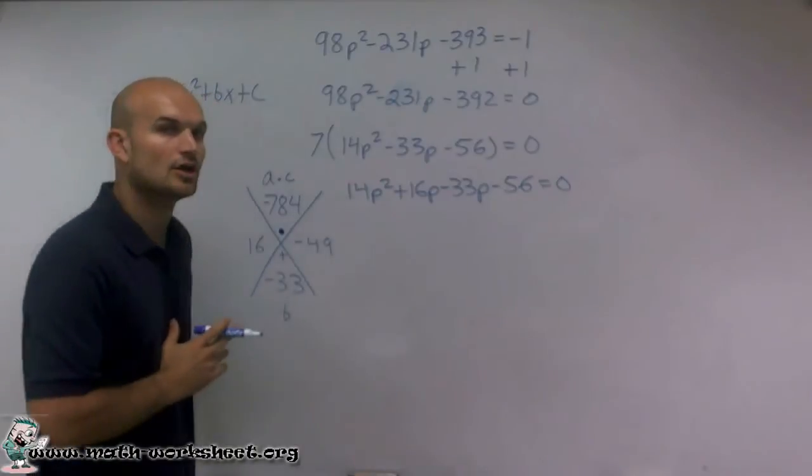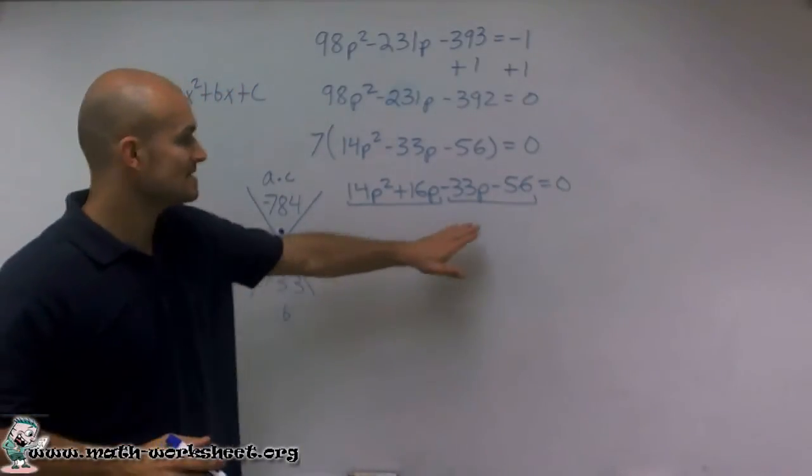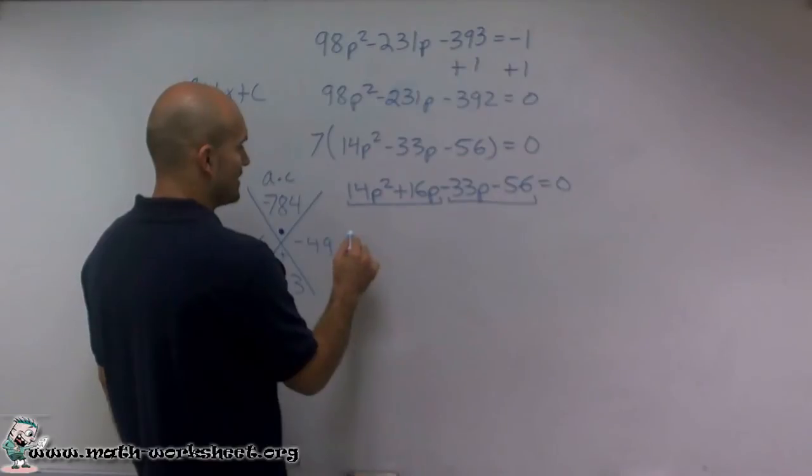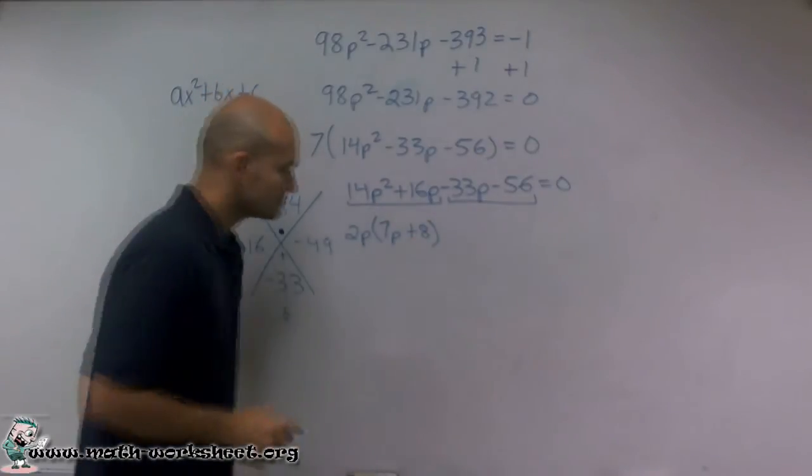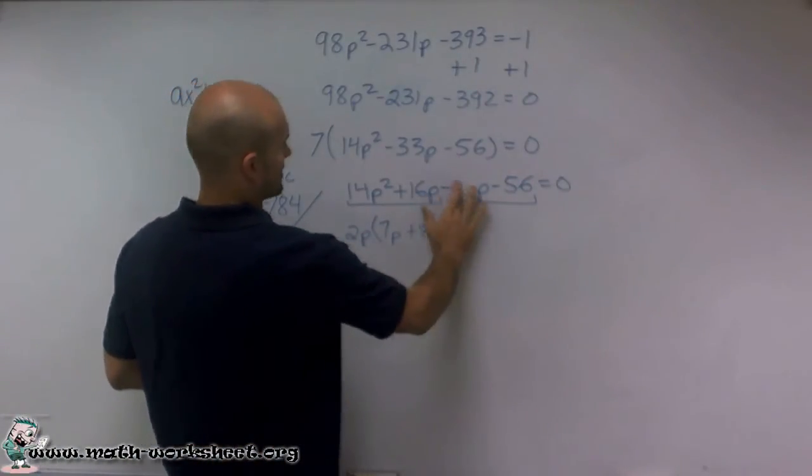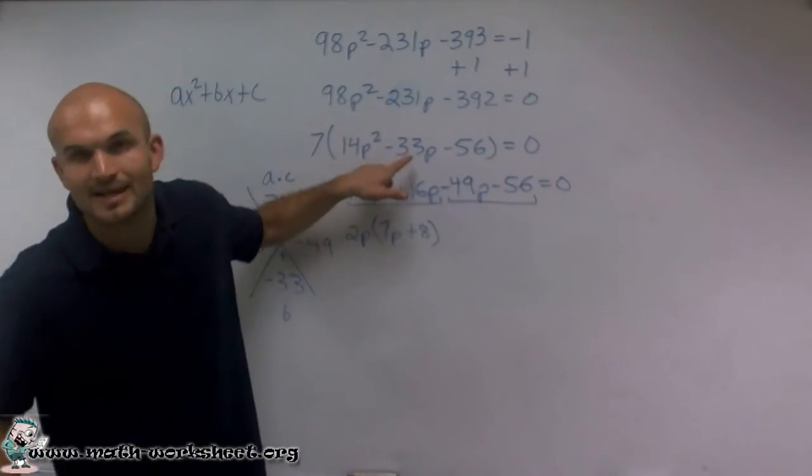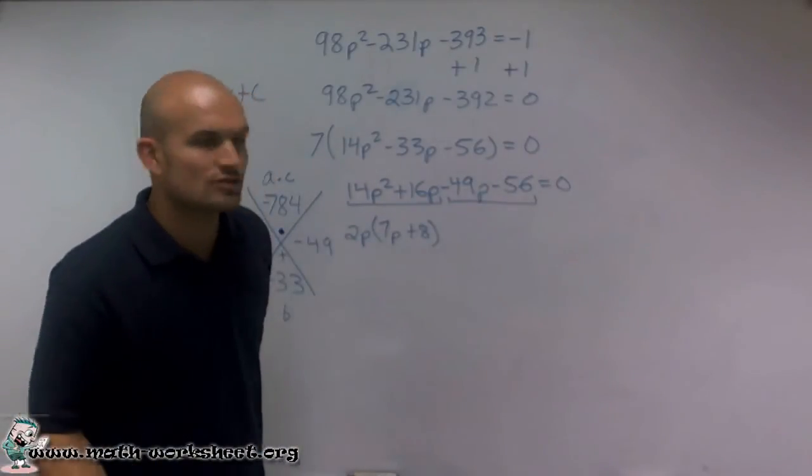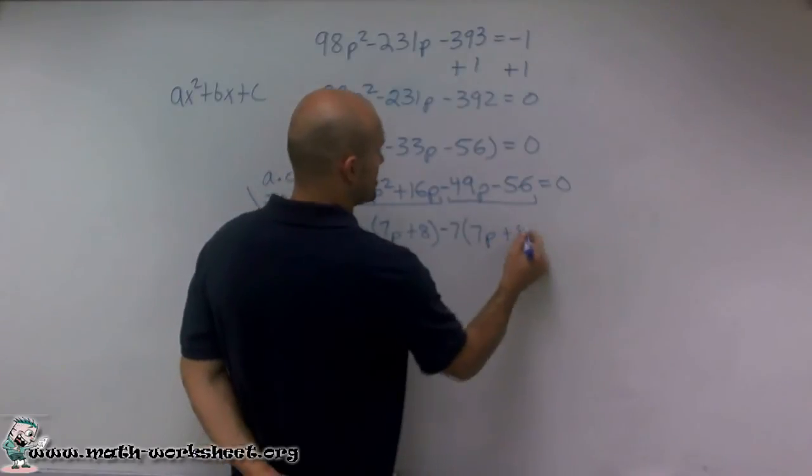So now the next thing I want to do is I look at this, and there's not a number that they all share in common. So what I'm going to do is use a factoring technique which we call factor by grouping. I'm going to factor the first two terms and the last two terms. So I take a look at these first two terms. What is it they have in common? Well, on these two terms, I can factor out a 2p. When I factor out a 2p, I'm left with 7p + 8. Out of these two terms, I can pull out a negative 7. And when I pull out a negative 7, what I'm left with is 7p + 8 equals 0.